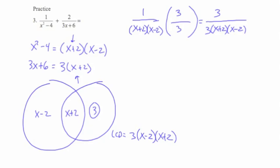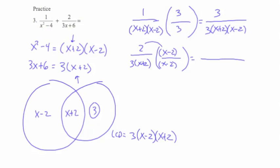My next fraction: 2 over 3(x plus 2) — I write that denominator factored. That was missing a factor of (x minus 2), so I'm going to multiply both top and bottom by (x minus 2). In the numerator, I distribute the 2: that's going to give me 2x minus 4. The denominator I leave factored: 3 times (x plus 2) times (x minus 2).